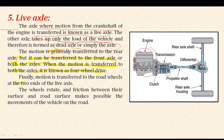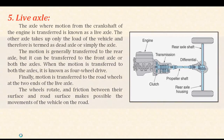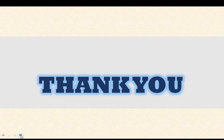The motion is normally transferred to the rear axle, but it can also be transferred to the front axle or both axles. When the motion is transferred to both axles, it is known as four-wheel drive. Finally, the motion is transferred to the rear axle at the two ends of the live axle. The wheels rotate and friction between their surface and the road surface makes possible the movement of the vehicle on the road. In today's lecture, we have discussed the major components of an automobile system. Thank you so much for attending this lecture. In the next coming lecture, we will discuss various components in a more precise manner.